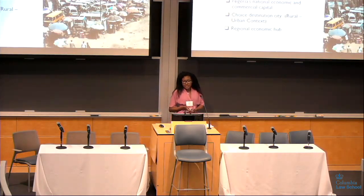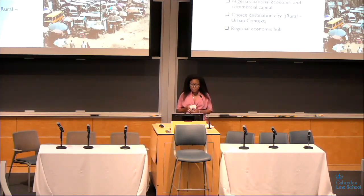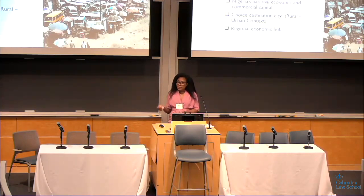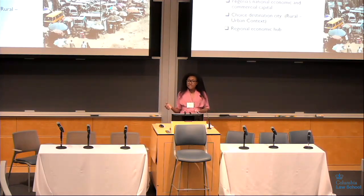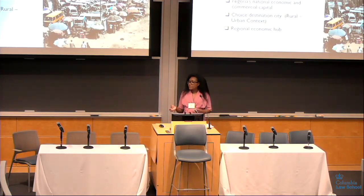I decided to focus on a case study of Lagos, Nigeria. Lagos is an urban coastal megacity with a population of about 21 million people, projected to double in size by 2050. Lagos is a national economic capital and a major regional economic hub. From a rural-to-urban context, I like to call Lagos the city of last resort — a lot of people across Nigeria see Lagos as the target destination from rural areas. So when that city itself is vulnerable to climate change, how do we address the possibility of climate migrants and where they might move when that city can no longer be lived in?